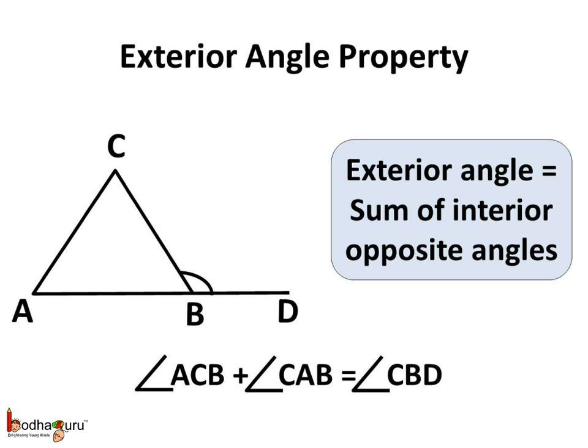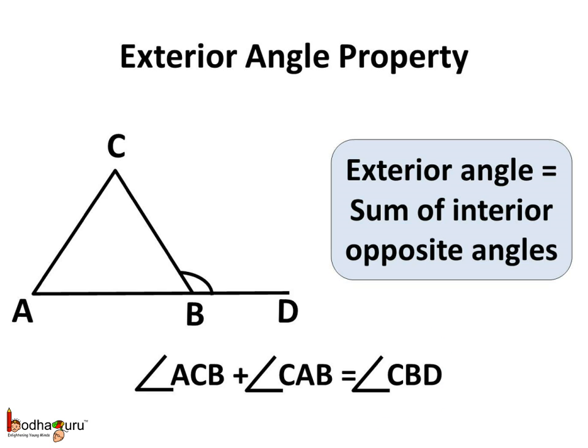Here in triangle ABC, angle CBD is an exterior angle. And hence, angle CBD is equal to the sum of the interior opposite angles, which are angle CAB — that is angle A — and angle ACB — that is angle C.